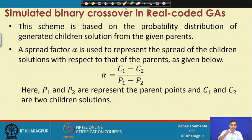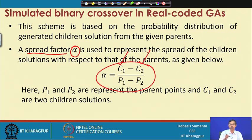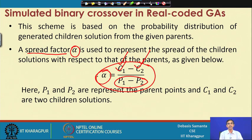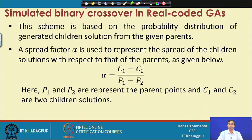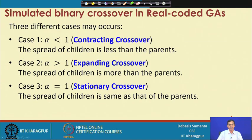The basic idea in this technique considers one factor called the spread factor, denoted as alpha. The spread factor is calculated by a formula: given anticipated children values C1 and C2 and parent values P1 and P2, you can calculate alpha. So alpha calculation is under your control — how much deviation you want between children solutions decides the value of alpha. The user does not need to be highly experienced in this case.